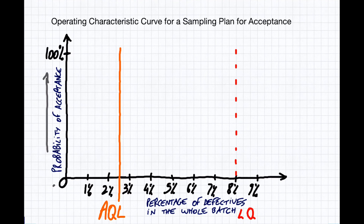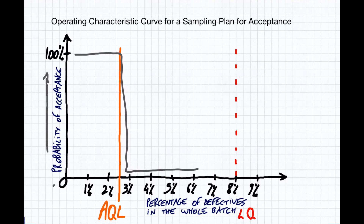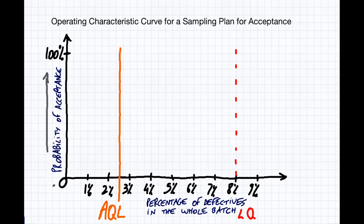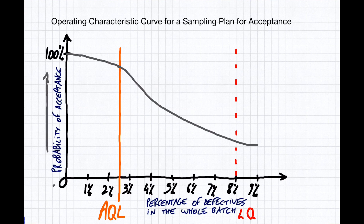Statisticians have devised sampling plans, but unfortunately they cannot follow exactly that ideal approach. This is based on a hypergeometric distribution — it can't be exactly like the ideal curve, but it tries to approximate it as closely as possible. In reality, it starts near 100%, goes down immediately, crosses the AQL point, then continues downward in a gradual curve like this.